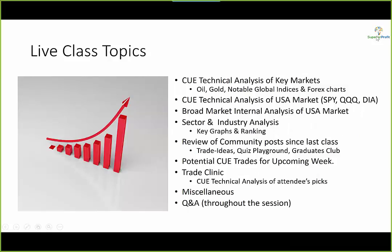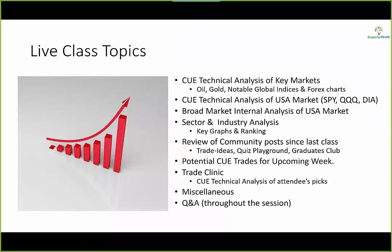As usual, we will look at a few key markets including Oil, Gold, Nifty — the Index for India — and SYNC Dollar. Then we will go to the US market and look at the three broad market ETFs: SPY, QQQ, and DIA, before going into broad market sector and industry analysis and ranking. Then we will go through some of the recent posts in Trade Ideas, Quiz Playground, and Graduates Club. And we will be happy to look at potential trades for the upcoming week as well as any stocks that you want us to analyze together.